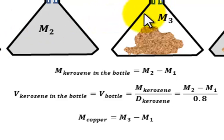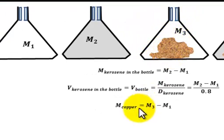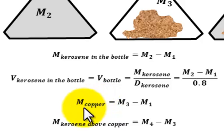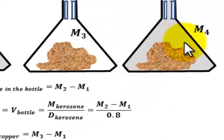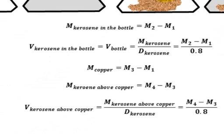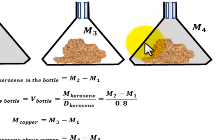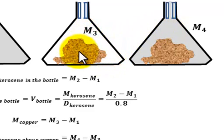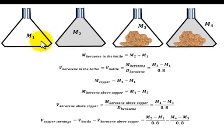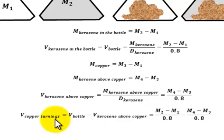We subtract the mass of the empty density bottle from the combined mass to get the mass of copper. Next, the mass of kerosene above the copper is M4 minus M3. The volume of kerosene above the copper turnings is (M4 minus M3) divided by the density of kerosene. Because if we find this volume, we find the volume of the empty space above the copper in step 3, which is important for finding the volume of copper turnings. So the volume of copper turnings equals the volume of the bottle minus the volume of kerosene above the copper.